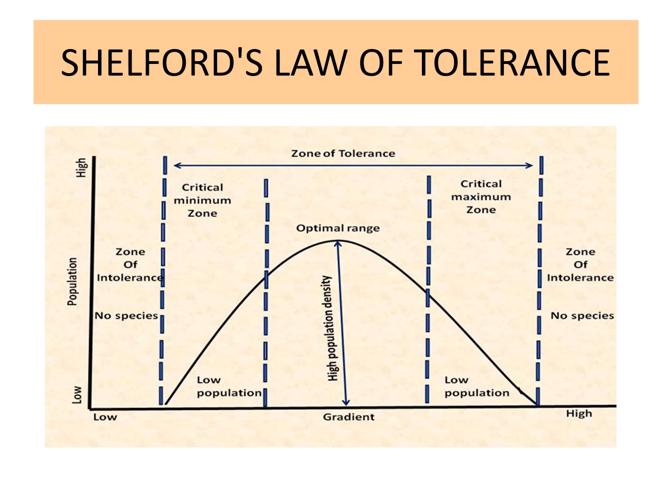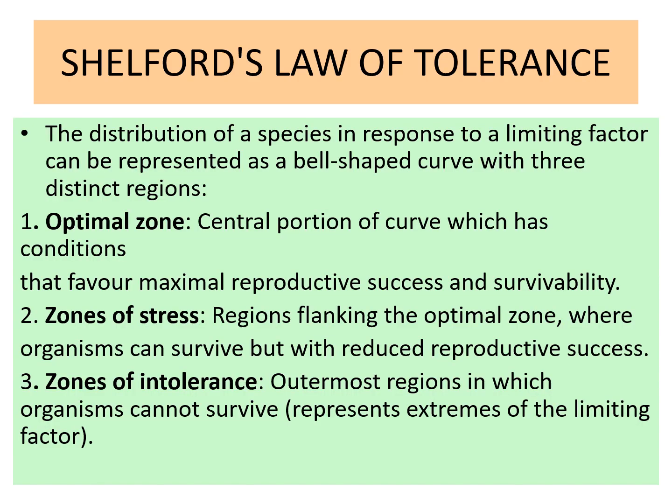So to summarize, there are three zones in Shelford's Law of Tolerance. One is the optimum zone where the maximum number of individuals is present and maximum reproductive success occurs. Then there is the zone of stress on both sides of the optimum zone, where individuals are present but in lesser amounts. And there is a zone of intolerance on both sides of the tolerance range where no individual is present.